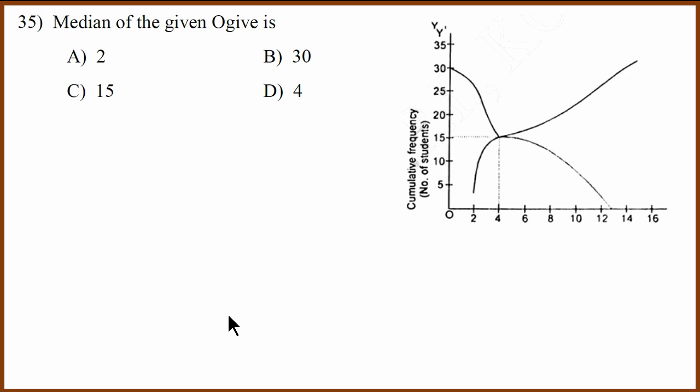Ogive median question. The median is where the two ogives intersect. So it will be 4.